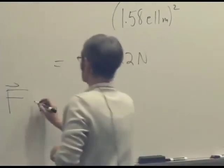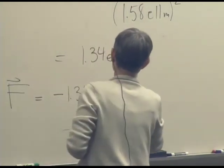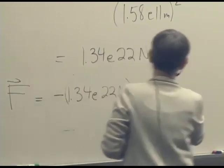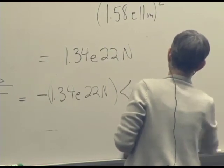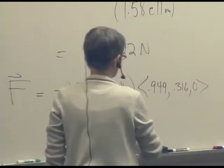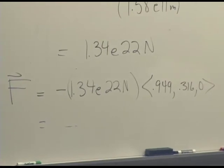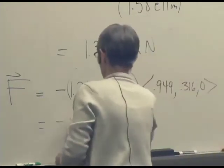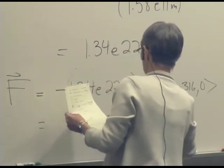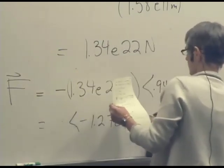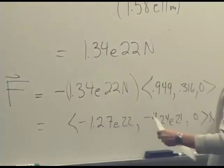Minus 1.34 times 10 to the 22 Newtons times 0.949, 0.316, 0. And it'll have some value. What does it come out to? Negative 1.27 times 10 to the 22, negative 4.24 times 10 to the 21, 0 Newtons.